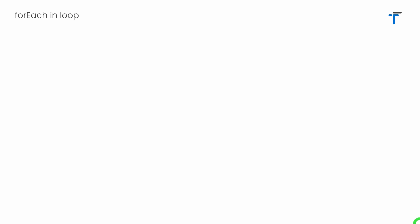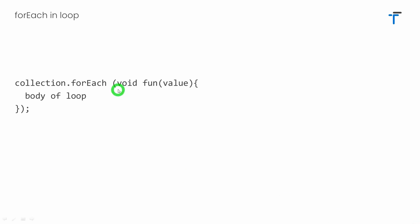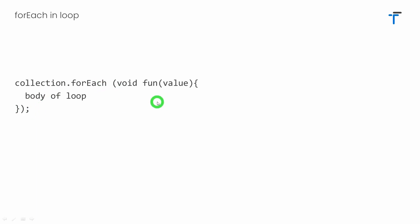The for-each loop is used to iterate over collections like list, set, or map. Wherever we have a collection, we can iterate its values using this loop. The syntax is: we must have a collection, then specify dot forEach, and inside the bracket we define a function that returns void — meaning it has no return type. This function must accept an individual value of the collection as a parameter. We then write the body of the loop with the statements we want to run. Make sure to write the closing bracket of the function and place a semicolon after the function call.